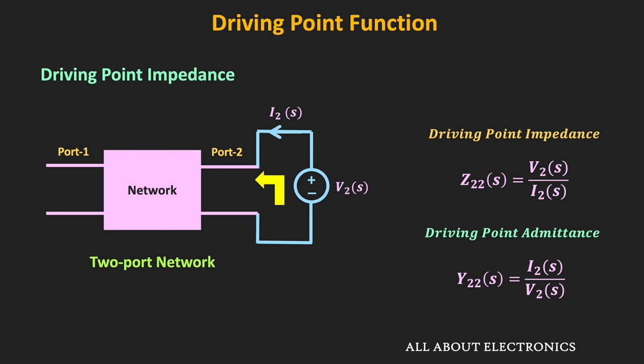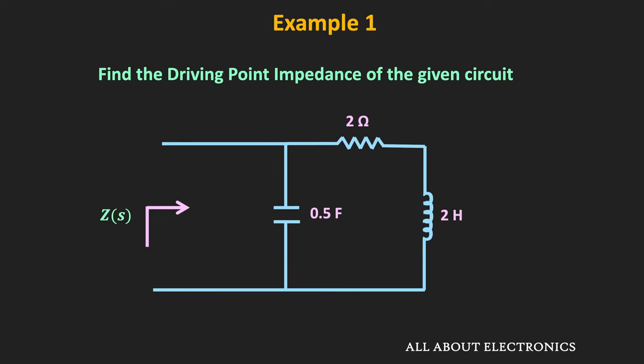Even if we do not know the port parameters like voltage and current, it is still possible to find the driving point impedance, provided we know the internal circuit of the network. Through a couple of examples, let us see how to find the driving point impedance. In this example, we have been asked to find the driving point impedance of the given circuit. We do not know the port parameters, but we know that the driving point impedance is the input impedance — it is the Thevenin's equivalent impedance seen across these two terminals. Let us find the equivalent S-domain representation for the given circuit.